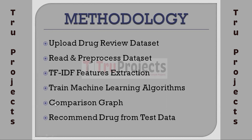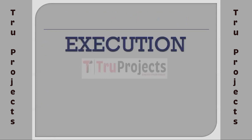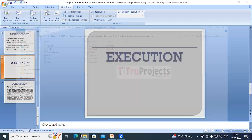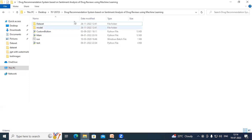The next module is Comparison Graph — used to plot an accuracy graph of each algorithm. The last module is Recommend and Test Data — used to upload test data, and then the machine learning model predicts the drug name and ratings. To execute this project, we first need to open the code folder.